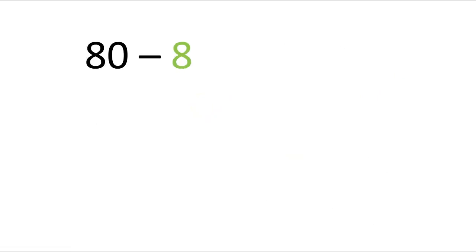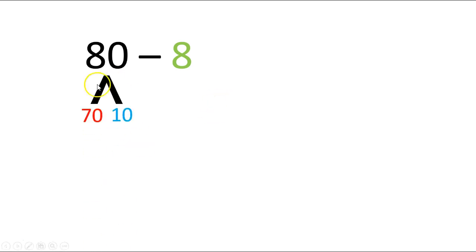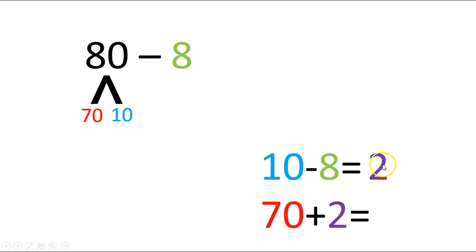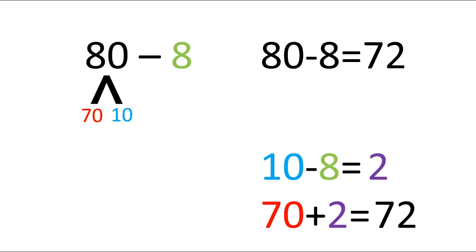I want you to go ahead and break up this one and then write your number sentences. Go ahead and push pause and then push play when you're done, and we'll compare ours and see if we got the same thing. So when you broke up this 80, did you get 70 and 10? Did you write 10 minus 8? What did you say 10 minus 8 equals? Equals 2. Very good. So now we need to get our next number sentence, which is 70 plus 2. And what did you put down as 70 plus 2 equals? 72. Very good. So 80 minus 8 equals 72.